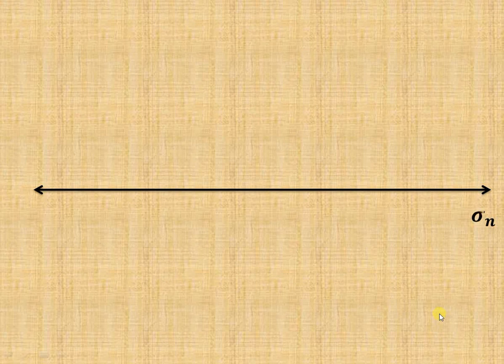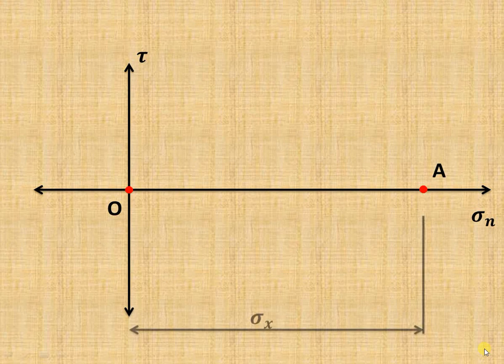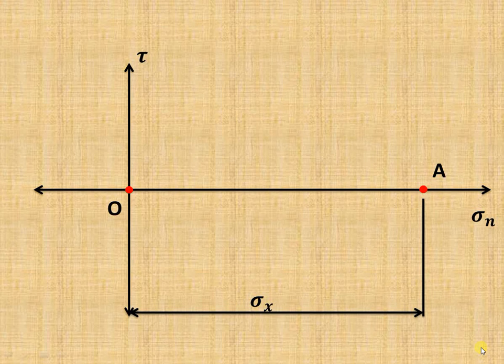As we have seen, Sigma X is equal to 100 MPa and Sigma Y is equal to 30 MPa. We take a suitable scale: 1 centimeter equals 10 MPa. We draw two axes — on the X axis we have normal stress, and on the Y axis we have tangential or shear stress. Since Sigma X is 100 MPa, at 1 cm per 10 MPa, we go 100 divided by 10, so at a distance of 10 centimeters we locate point A representing Sigma X.